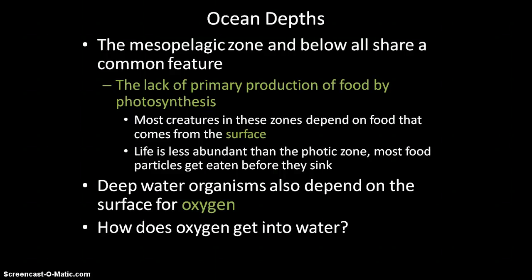The animals that live in the mesopelagic zone and the deep sea also depend on the surface for oxygen. We need to look at how oxygen actually gets into the water and discuss how these creatures can get oxygen. The two things that animals need — food and oxygen — are lacking in the mesopelagic zone and the deep sea. They need to figure out ways to get food and oxygen in order to survive.